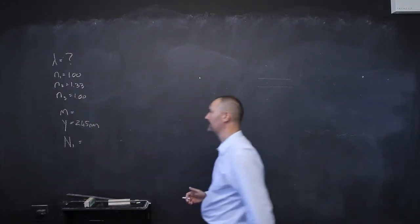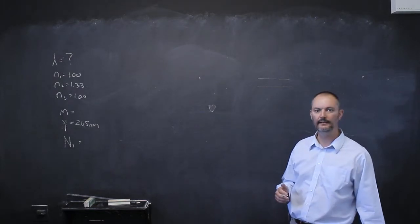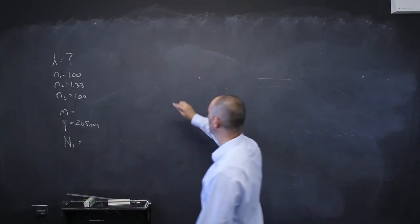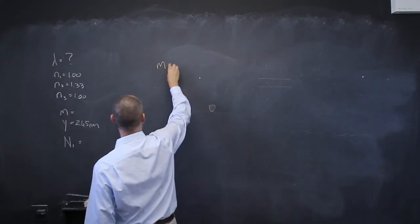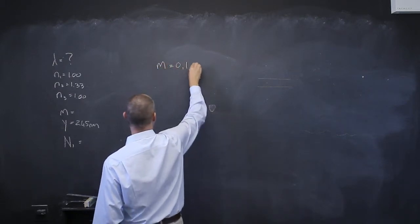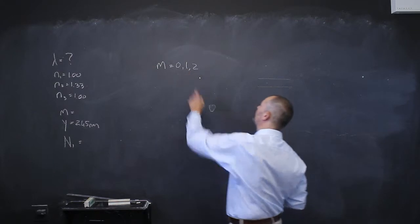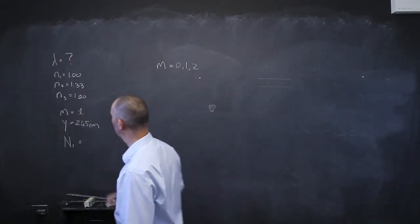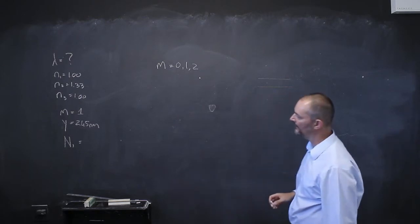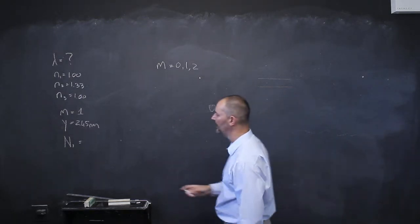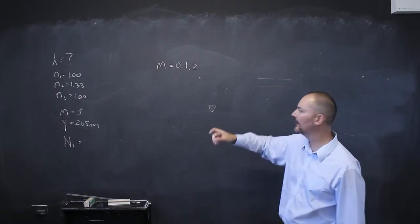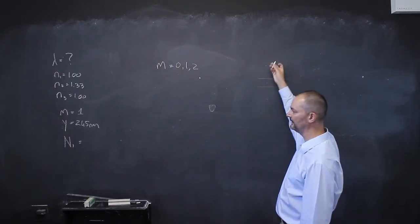So those words contain so much information. Okay, so we now know what the wavelength is in air. We know these refractive indexes. What is M? What is M there, that integer M? Well, they told me it's the second thickest. And M is always 0, 1, 2. So the second thickest one is going to be an M equals 1.